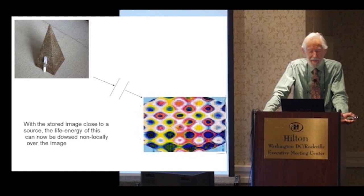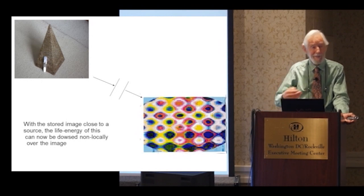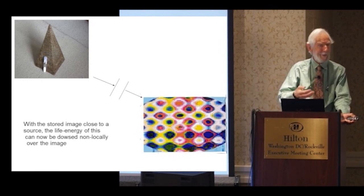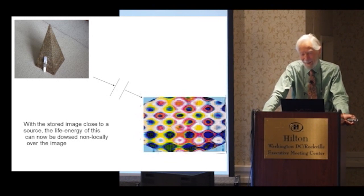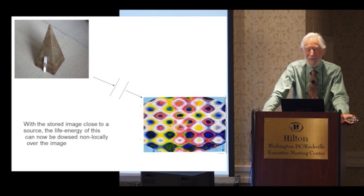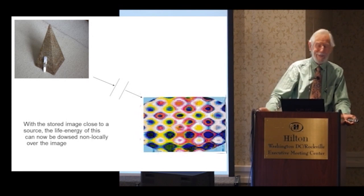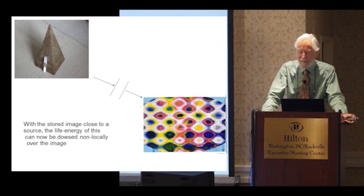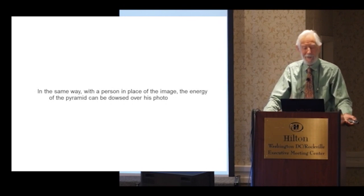In the same way, with a person in place of the image, the energy of the image can be dowsed over his photograph. So I've stored my wife's person on ORMUS magnesium phosphate, and then I can dowse actually her life energy. But in this case, the ORMUS magnesium phosphate containing her information is placed near the orgonite, and I can dowse the energy of the orgonite over the photograph of my wife very well.